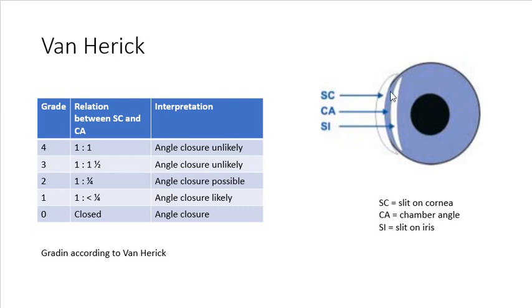So if this area, this zone here, is open and wide, that's an open angle. And we would assign that a grade 4. And the relationship between SC and CA is 1 to 1.